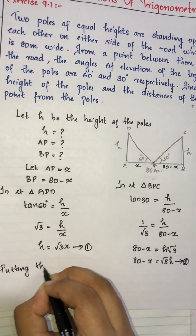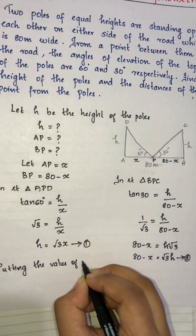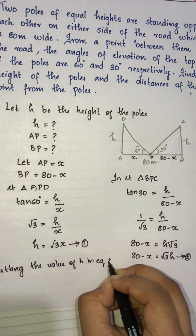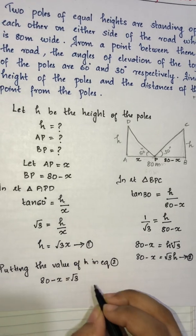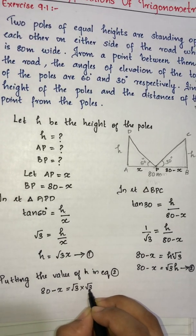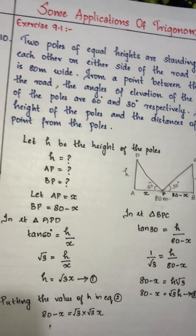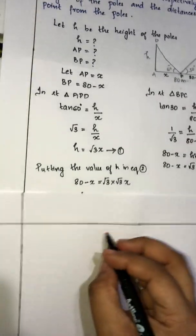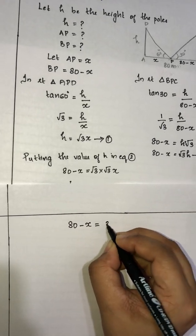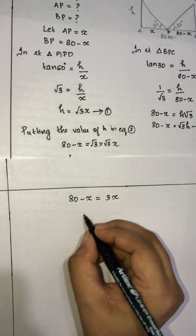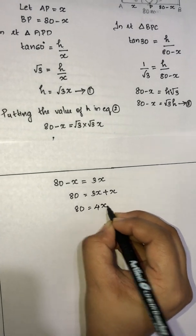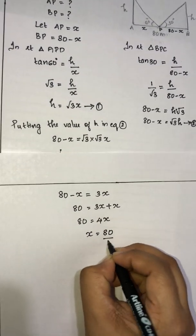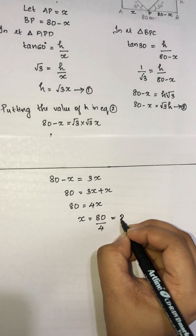Putting the value of h from equation 1 into equation 2: 80 minus x is equal to root 3 into root 3x, which gives 80 minus x equals 3x, so 80 is equal to 4x, and therefore x is equal to 80 divided by 4, which is equal to 20.